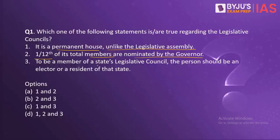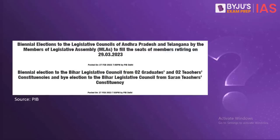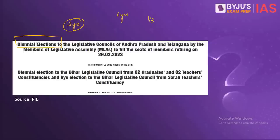To be a member of a state's legislative council, the person should be an elector or a resident of that state. We have taken this question because in multiple states, elections are to be held for the members of legislative councils. These are biennial elections — they take place every two years — which means that the term of members of the legislative council is six years, where one third of the members get retired every two years.